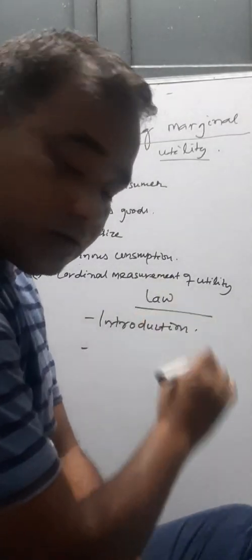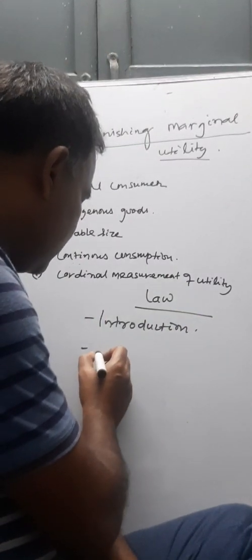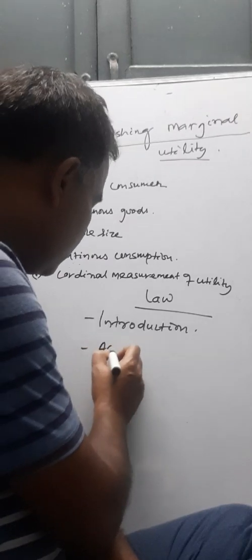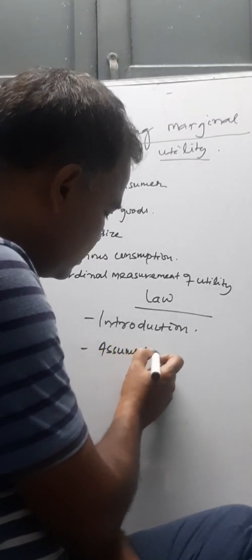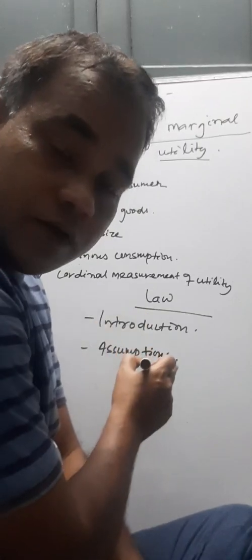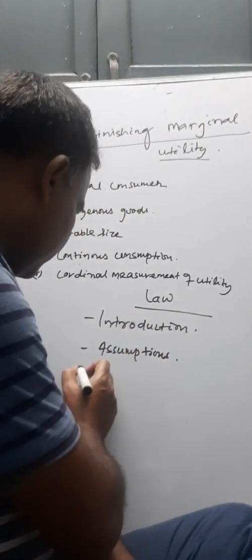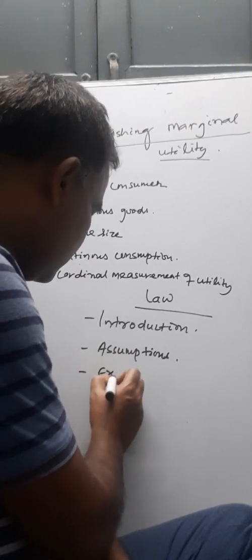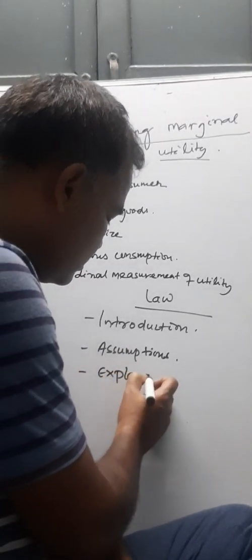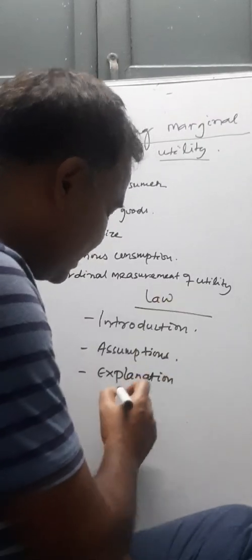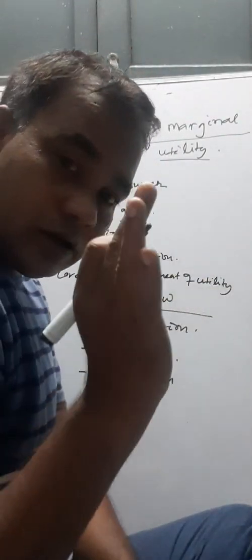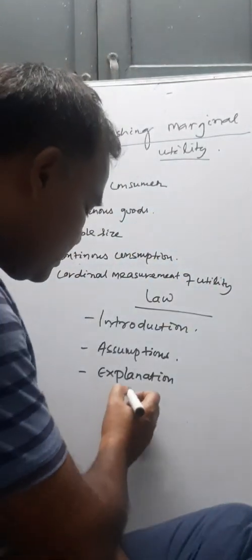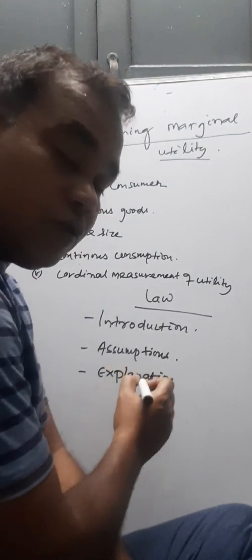The four things are: first, introduction; second, assumptions; third, explanation — which includes explanation of the law with the help of a table and with the help of a diagram; and fourth, limitations.